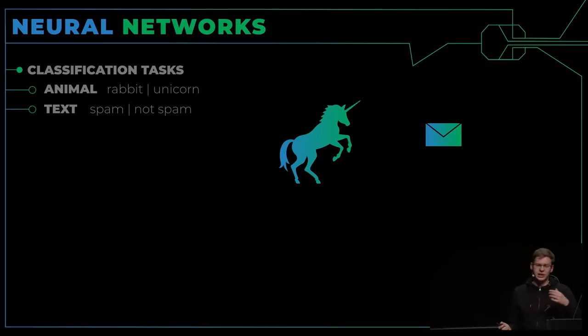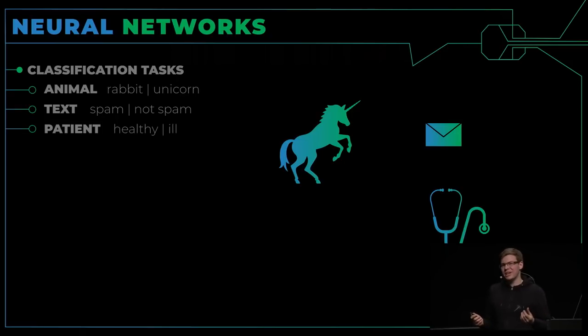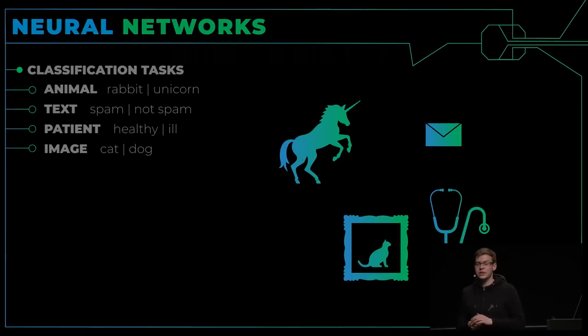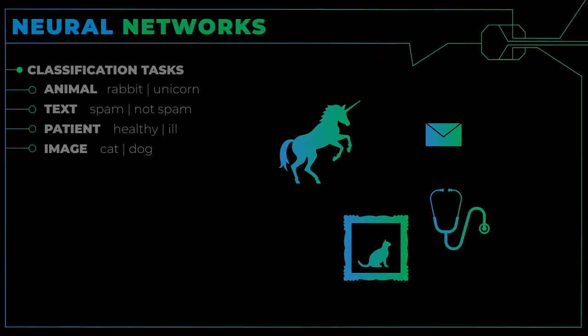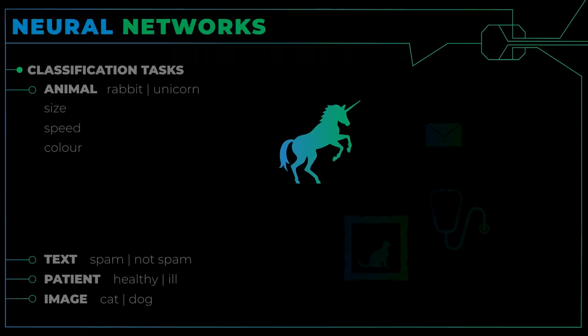Die Frage, die wir beantworten müssen, ist: Was soll unser neuronales Netz erzielen? Soll unterschieden werden zwischen Tier — Hase, Einhorn — Text, Spam/Kein-Spam, Patient gesund/krank, oder ein Bild — Katze oder Hund? Wir haben bereits gesehen, dass wir bei den Tieren Eigenschaften erkennen müssen, zum Beispiel Größe, Geschwindigkeit, Farbe — irgendeine Art von Eigenschaft, die das Tier beschreiben kann. Diese Eigenschaften nennen wir auch Features.